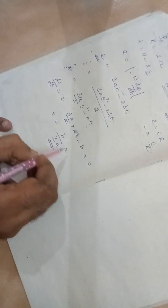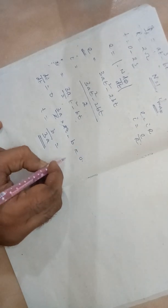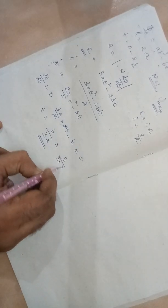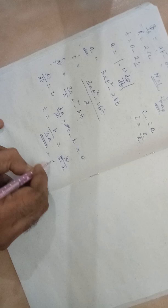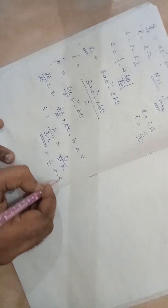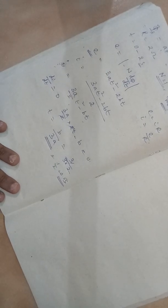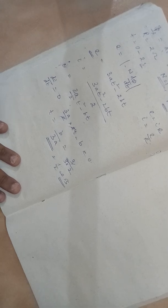If you put the value, what is the value of B we have taken? We have taken 3. So 3 into 2, it is 1 by 2 or 0.5 seconds. At 0.5 seconds, we are getting the maximum current.